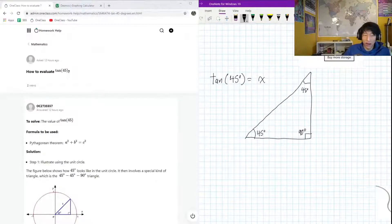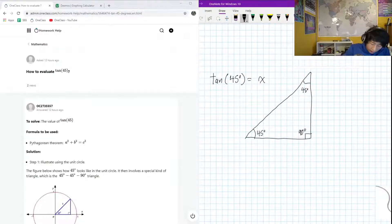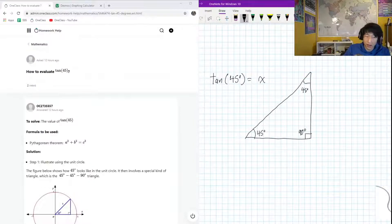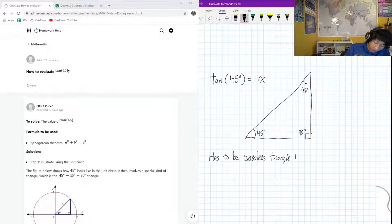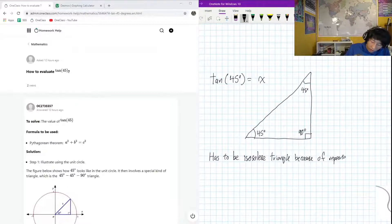So as you can see, we have an isosceles triangle here, and this definitely has to be an isosceles triangle because of repeated angle.